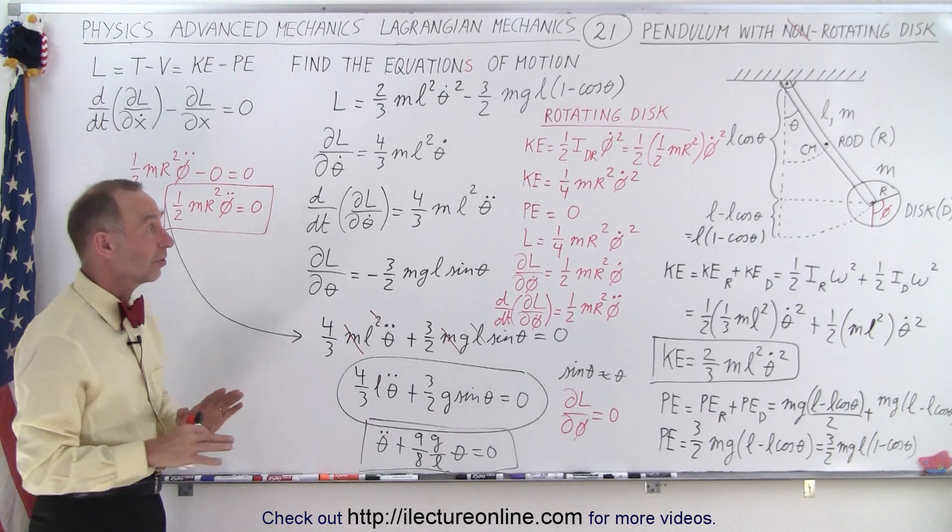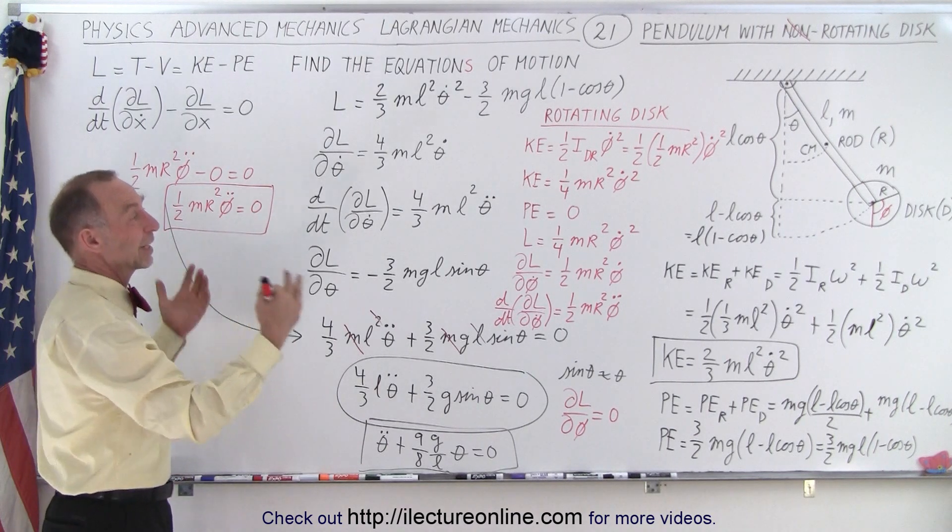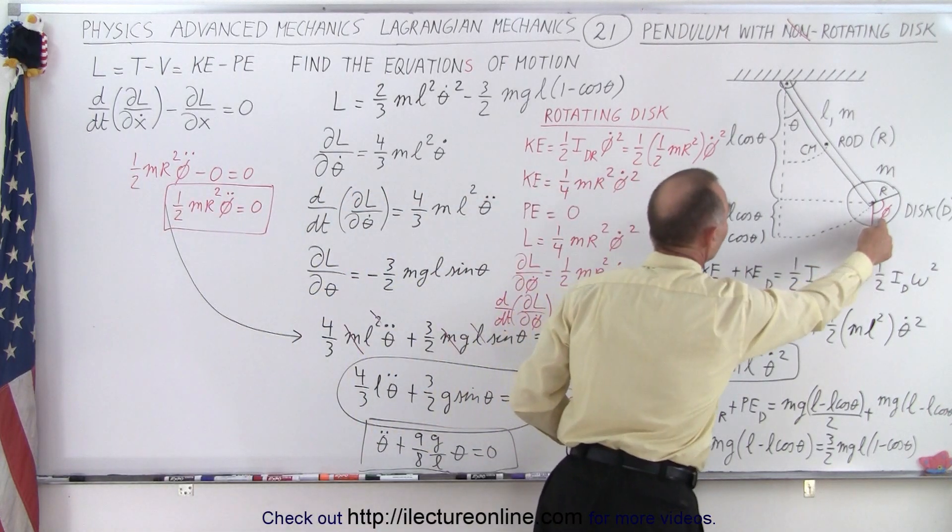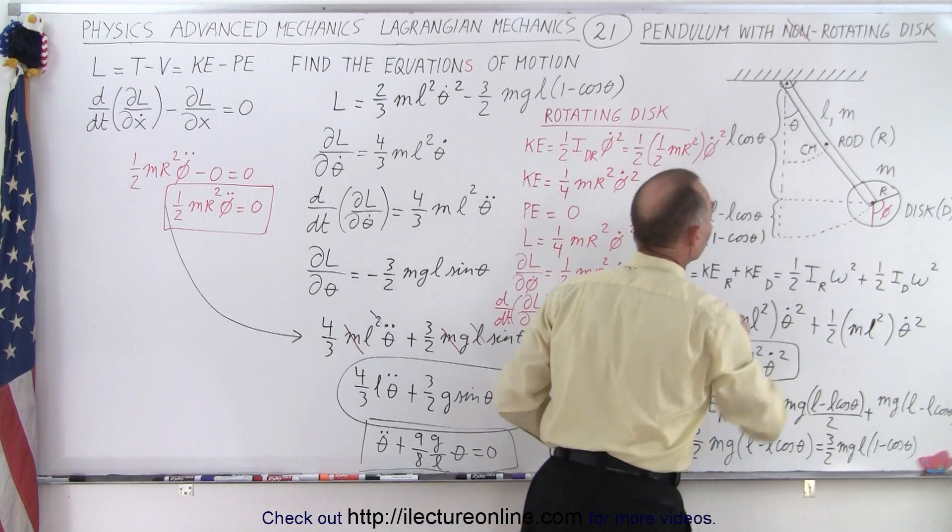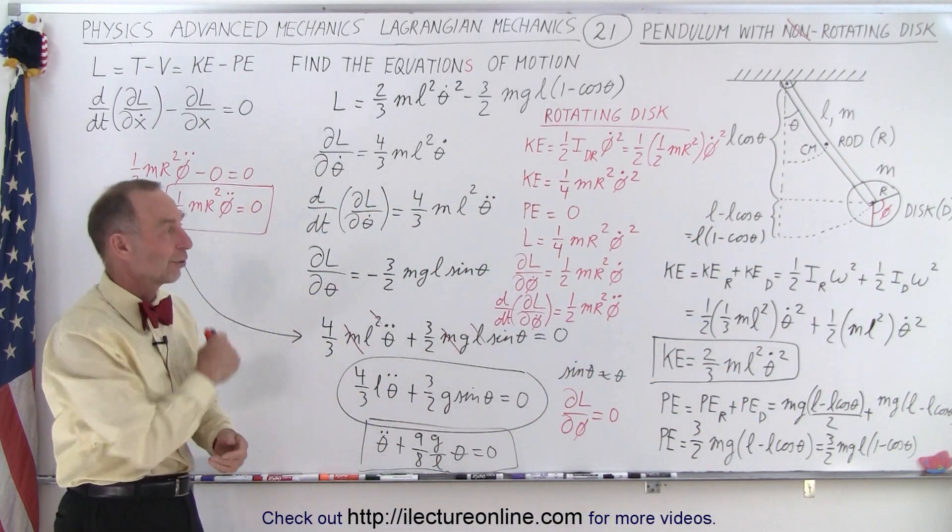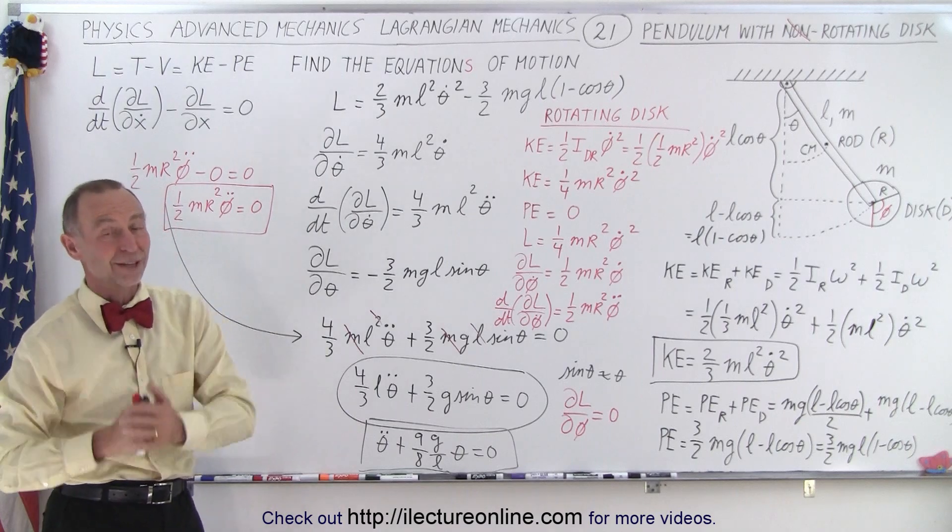But what's important to see is that even though it makes it seem like it's a much more difficult problem when we allow the disk to rotate, since the rotation depends on a different angle than this, Lagrangian makes it really easy to find a solution to that. And that is how it's done.